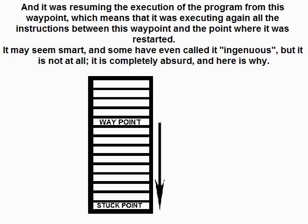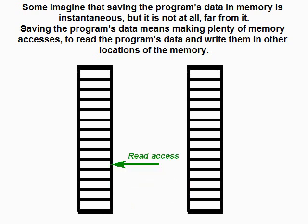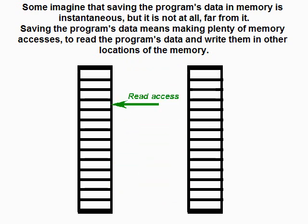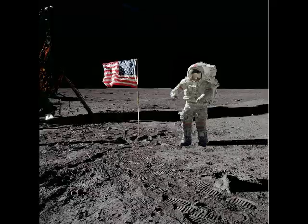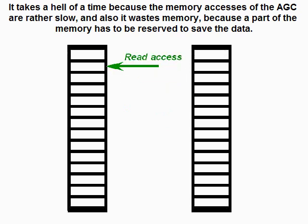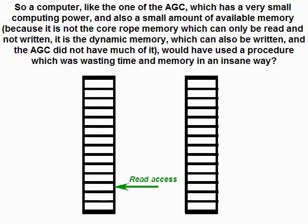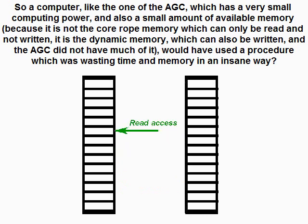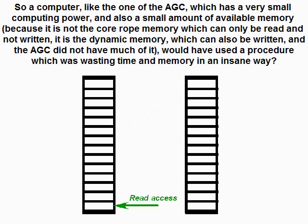This may seem smart — some have even called it ingenious — but it is not at all; it is completely absurd. Saving the program's data is not instantaneous: it means making many memory accesses to read and write data to other memory locations, which takes a significant amount of time because the AGC's memory accesses are rather slow, and it also wastes memory since a portion must be reserved for saved data. A computer like the AGC, with very small computing power and a small amount of writable dynamic memory — since the core rope memory can only be read, not written — would have used this time-and-memory-wasting procedure in an insane way.